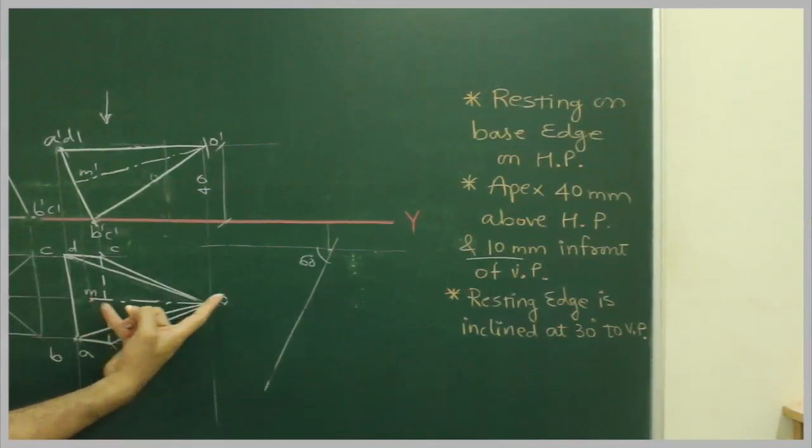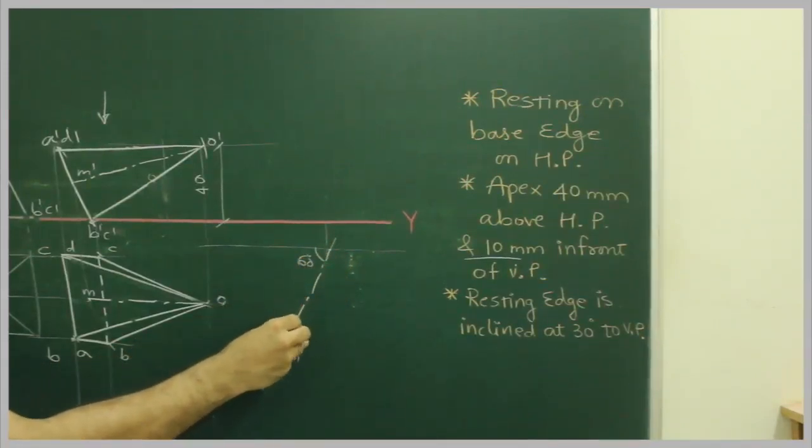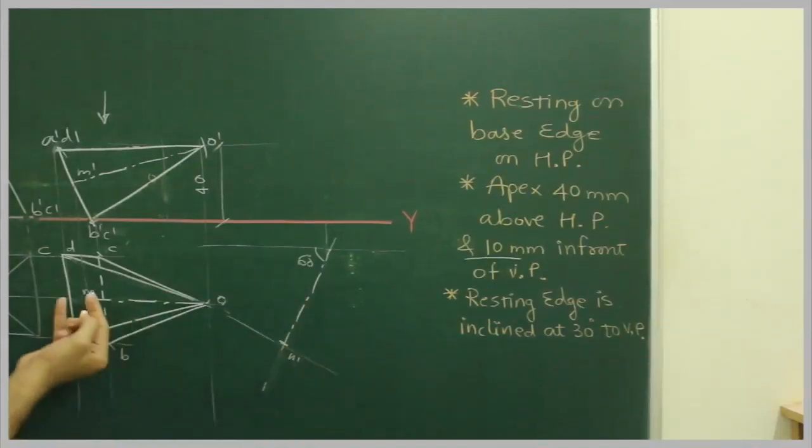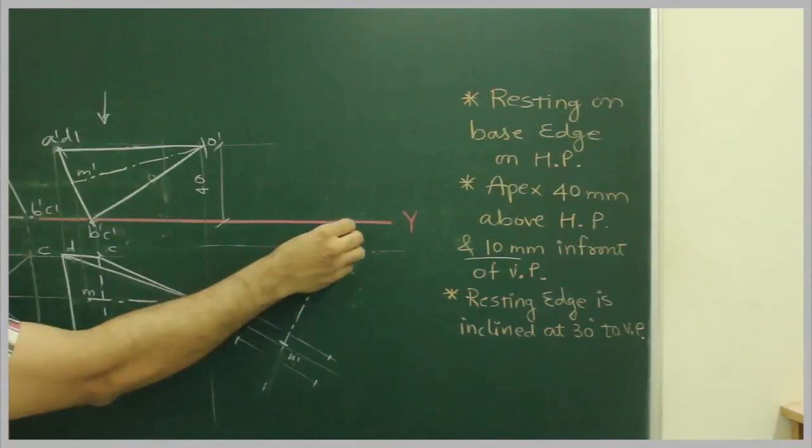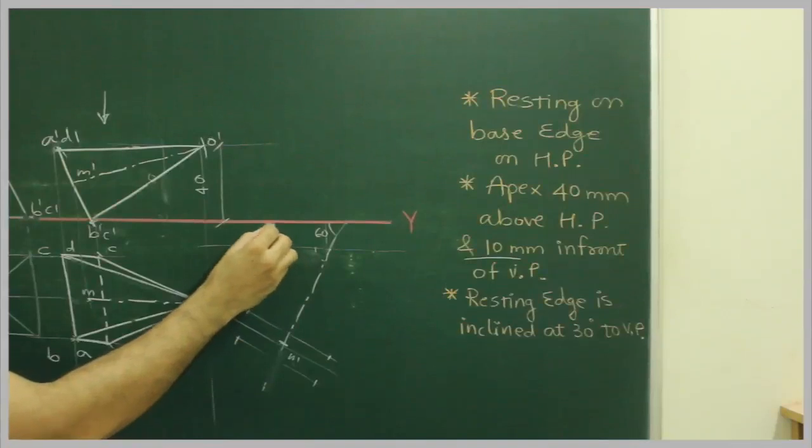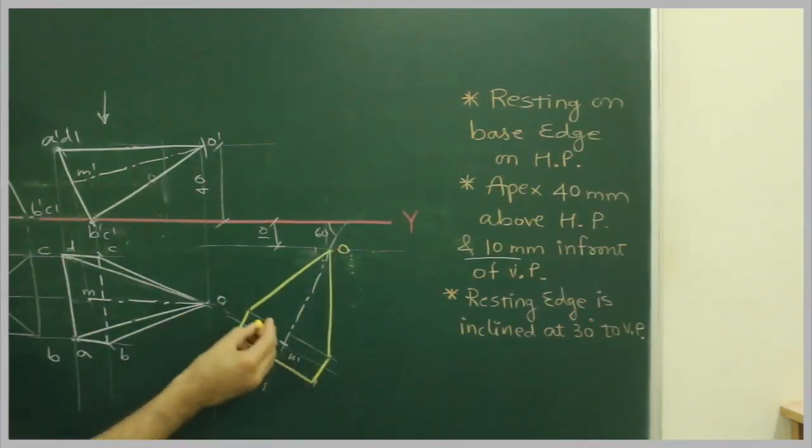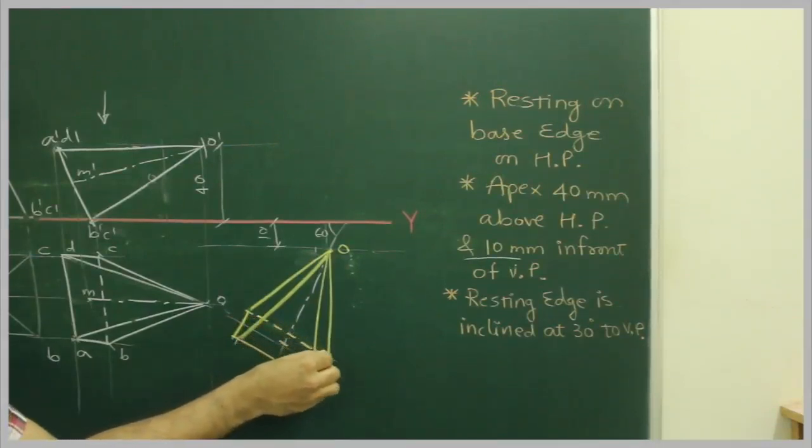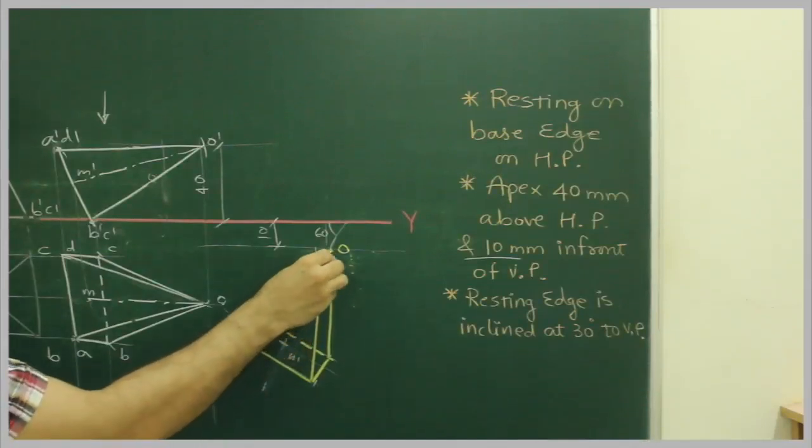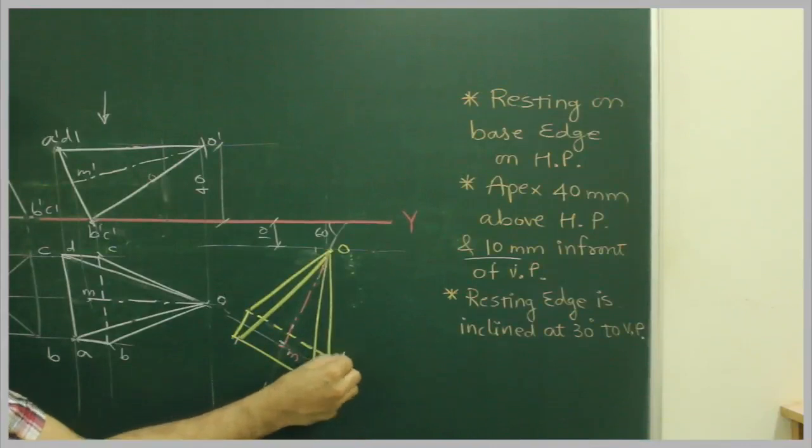Then we will take O dash to M dash, O to M, and we will cut here. So I will get M. And we will take the distance. This is the axis. This is A, B, C, D.